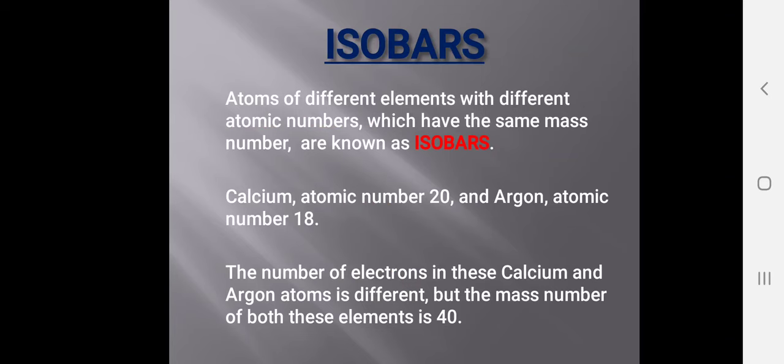Isobars are atoms of different elements with different atomic numbers but the same mass number. For example, calcium has atomic number 20 and argon has atomic number 18 — their atomic numbers are different, but both have a mass number of 40.